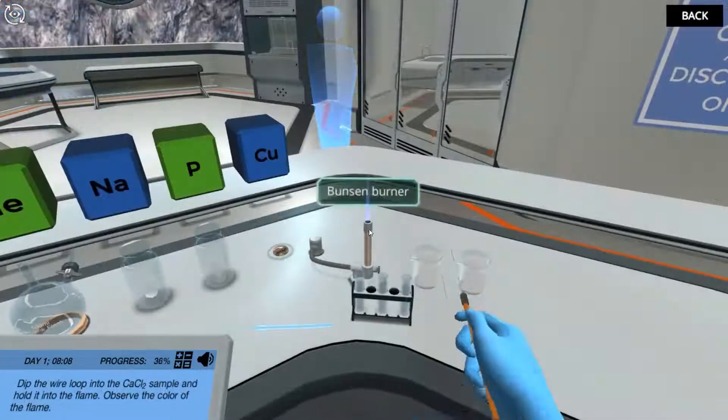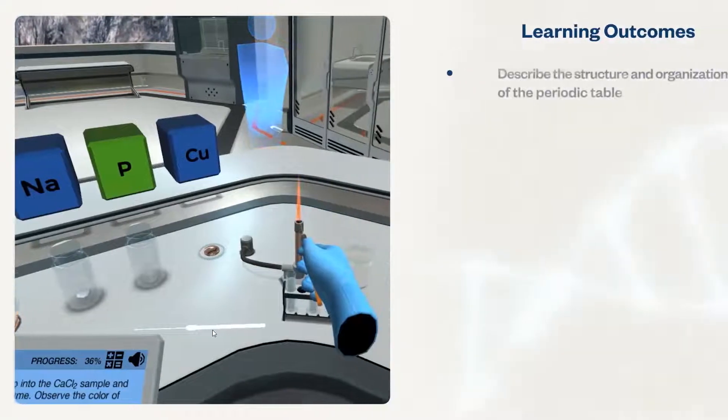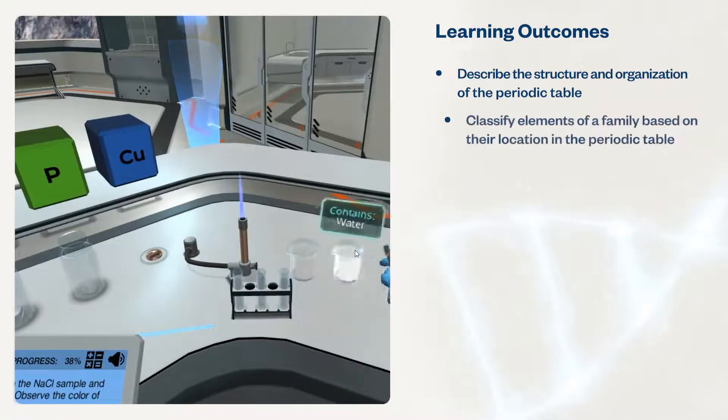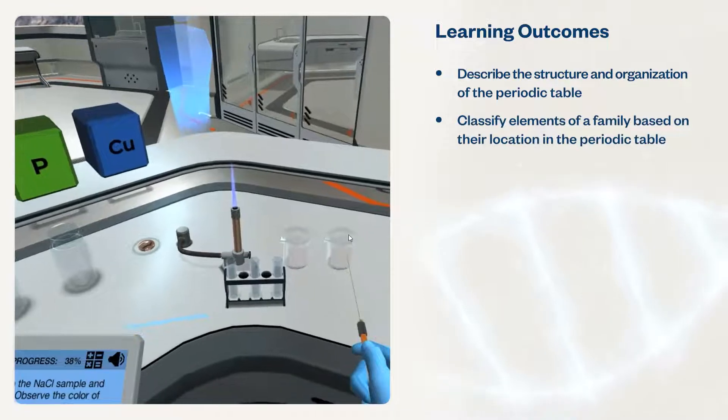These simulations will help students describe the structure and organization of the periodic table, and classify elements of a family based on their location in the periodic table.